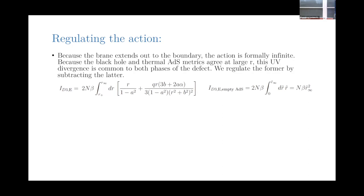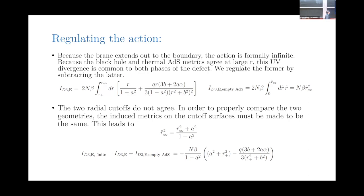We compare the defect action and the action in just empty thermal AdS. The two radial cutoffs are not the same because in order to properly compare the two geometries, we have to make them have the same boundary conditions — specifically the induced metrics on the cutoff surfaces must agree. Taking the large radius limit of the black hole metric and making it agree with the empty AdS metric, we find relations between the cutoffs. This relationship is exactly what's required to cancel the divergence in the D3-brane action, leading to a finite result which is linear in the temperature. [Question: Does the finite piece depend on how precisely the subtraction is done?]